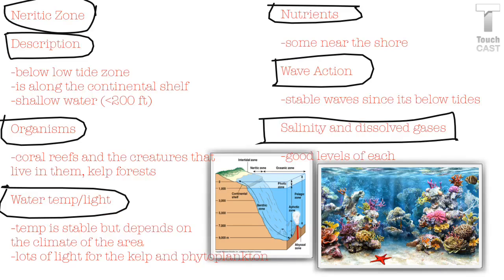The next zone is called the neuritic zone — it's below the low tide and still on the continental shelf. Coral reefs and all the creatures that live in them, and kelp forests, are all there. Temperatures are good but vary depending on the area. There's lots of light for kelp and phytoplankton, good nutrients near the shore, stable waves because it's below the tides, and good levels of salt and gases. This is where all the really cute, beautiful creatures — like Finding Nemo kind of stuff — live.